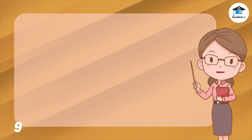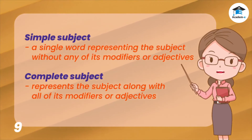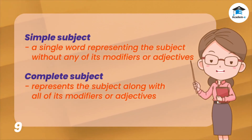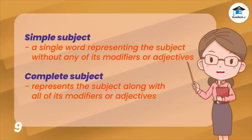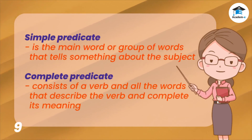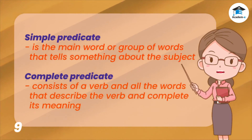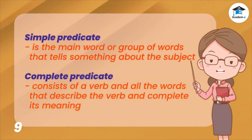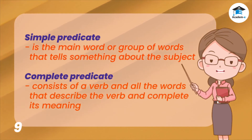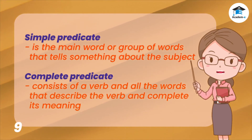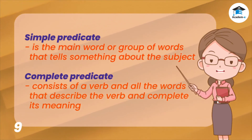Always remember: the simple subject is a single word representing the subject without any of its modifiers or adjectives, whereas the complete subject represents the subject along with all of its modifiers or adjectives. The simple predicate or verb is the main word or group of words that tells something about the subject, whereas the complete predicate consists of a verb and all the words that describe the verb and complete its meaning.